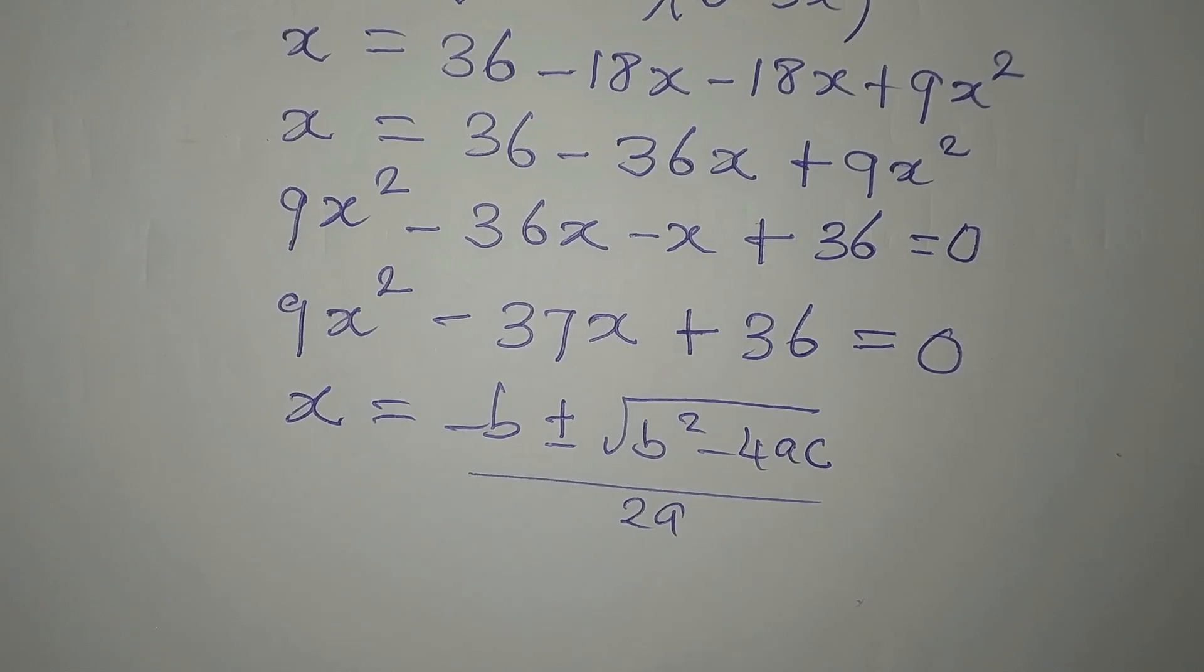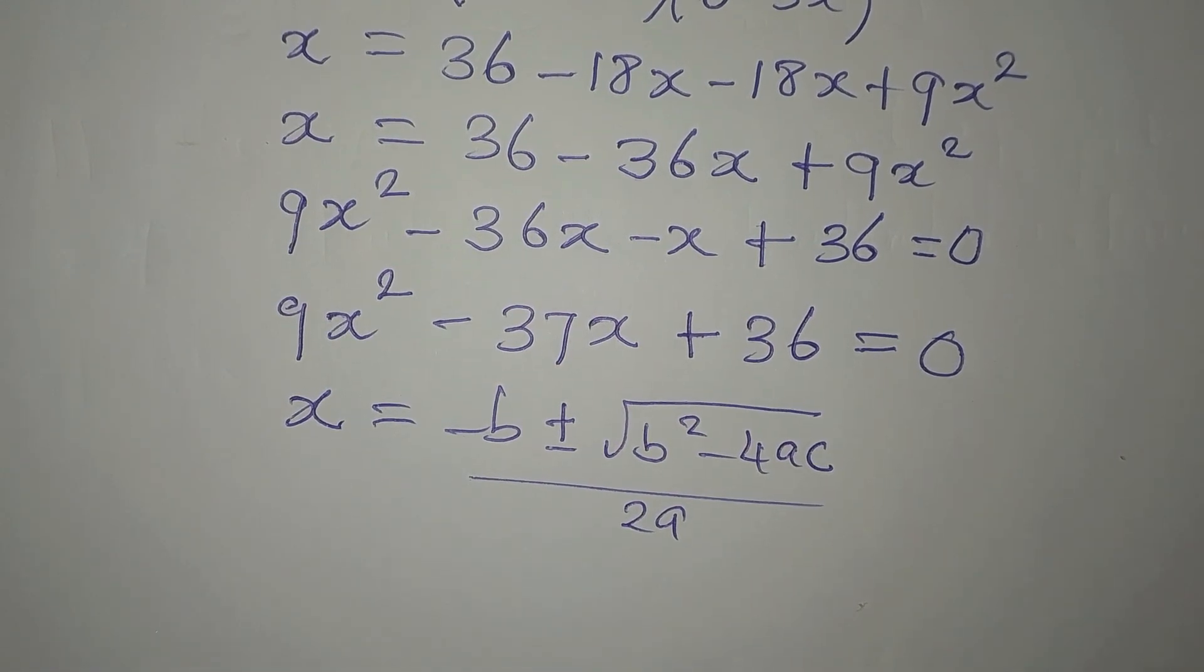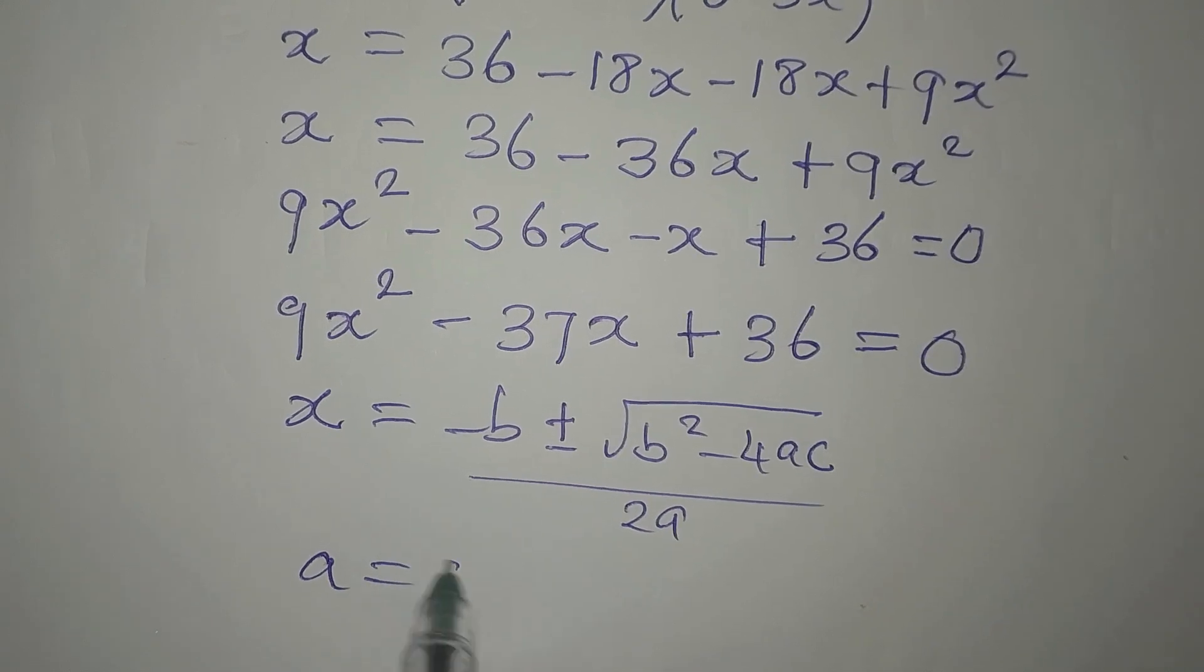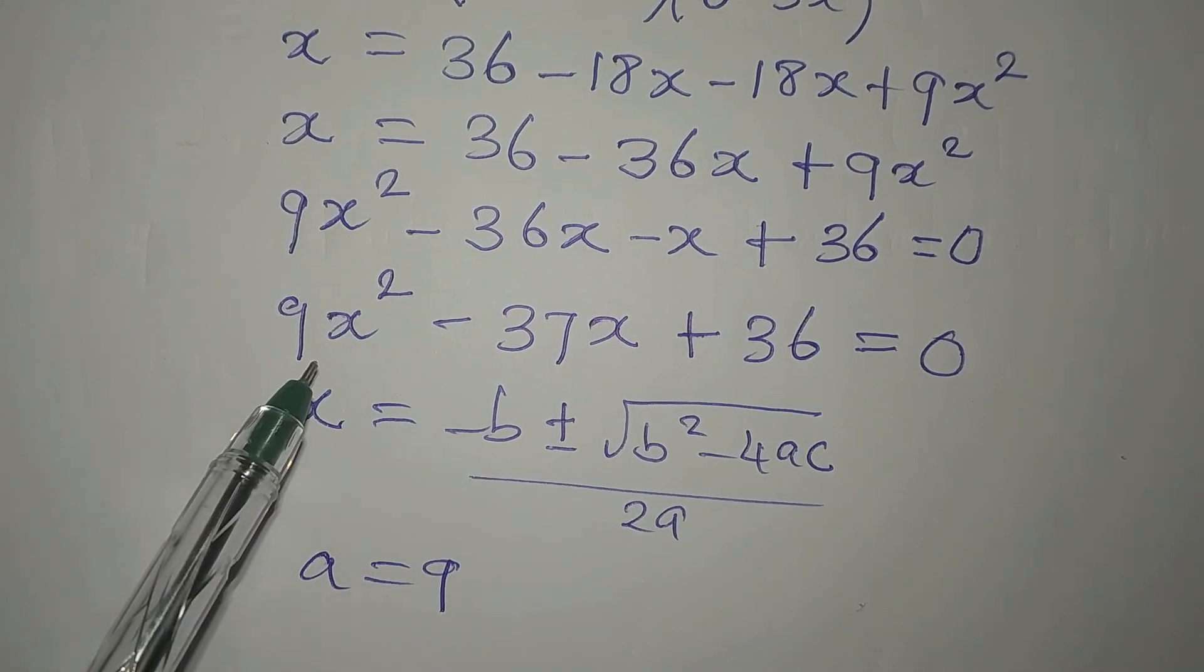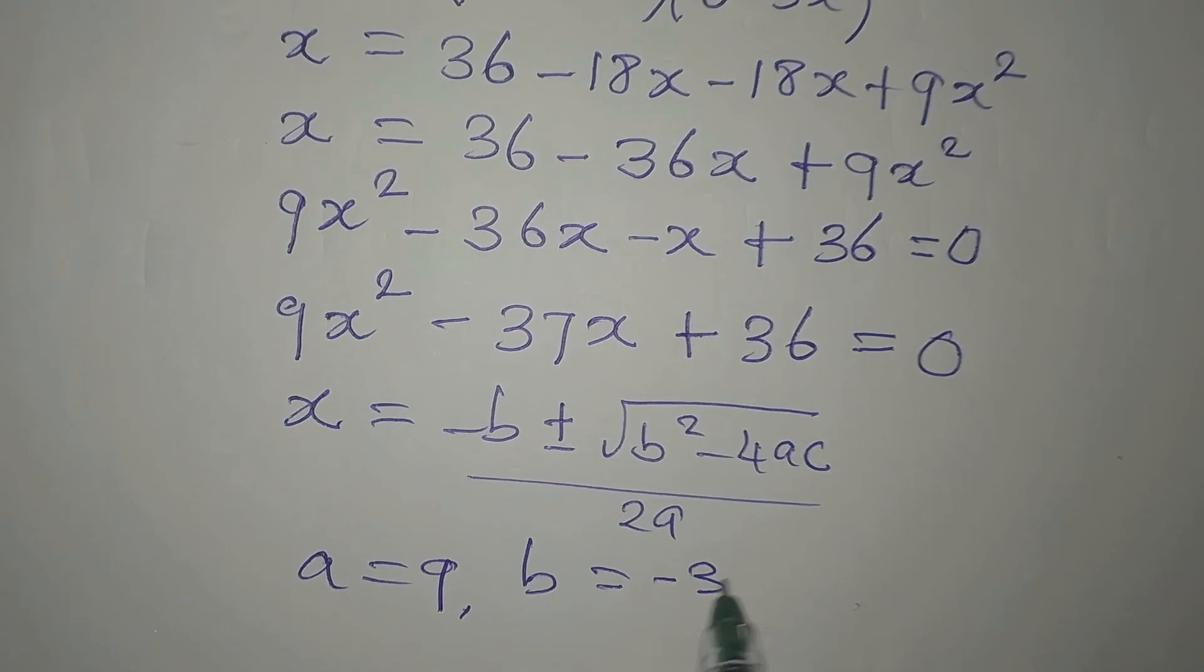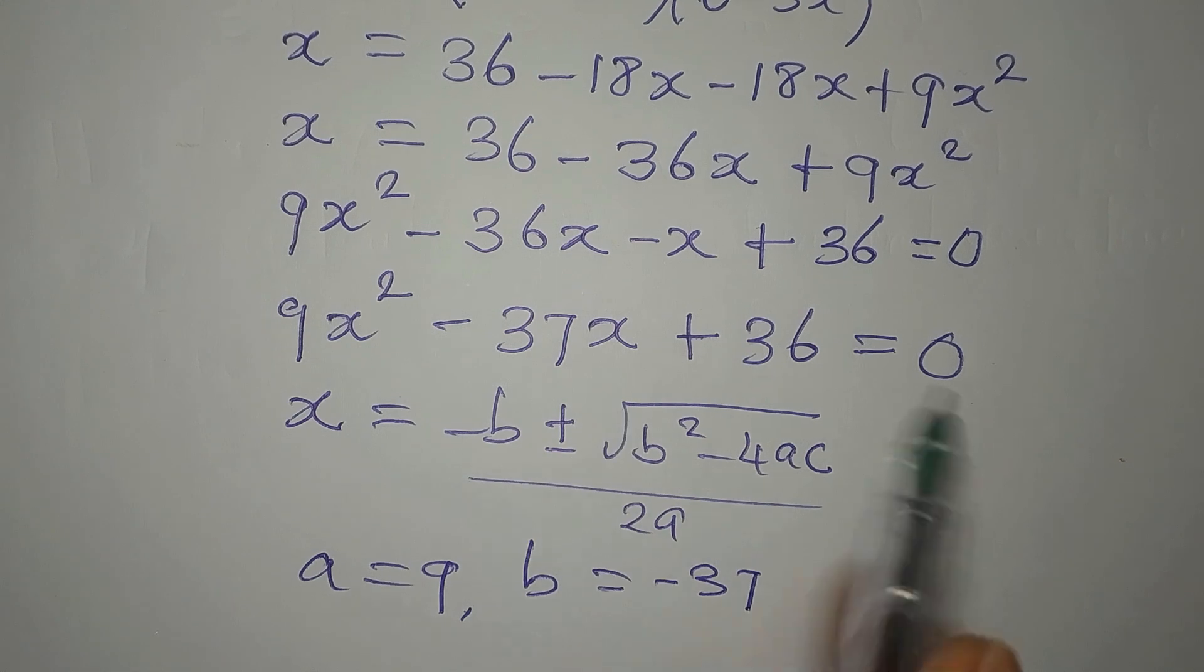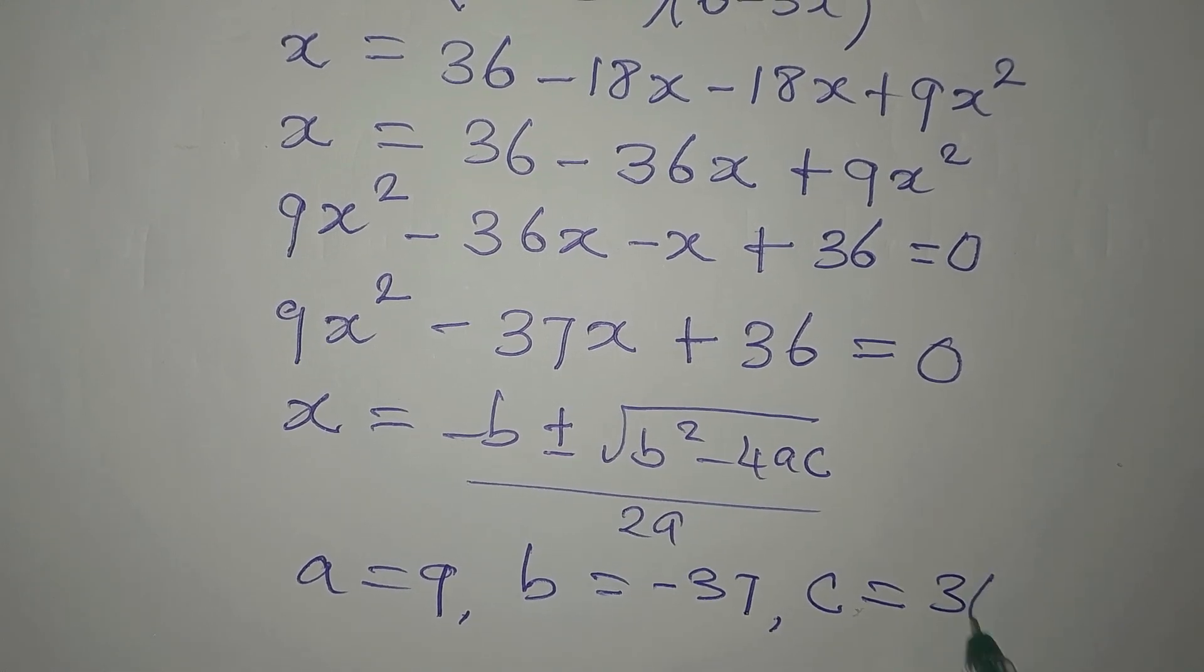The only difficult thing about using the formula is remembering the formula. Once you know the formula offhand, you can solve it. Now, our a is 9, the coefficient of x squared. Our b is minus 37, the coefficient of x. And then our c is 36.